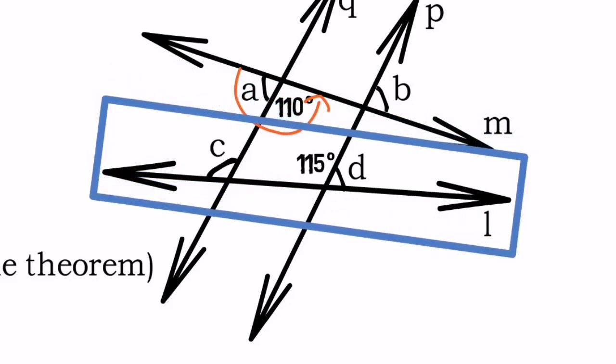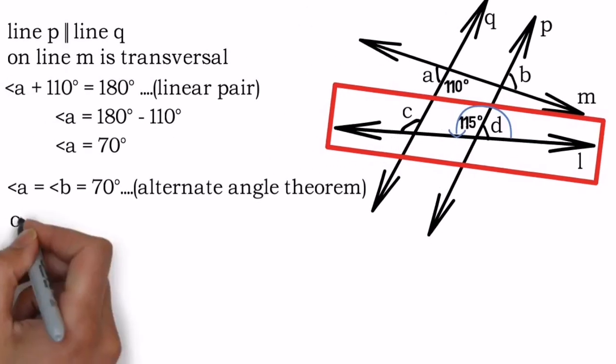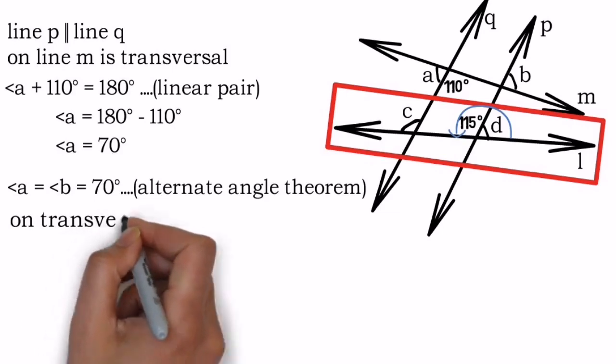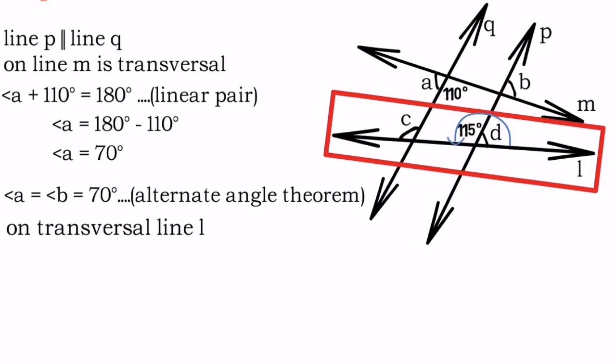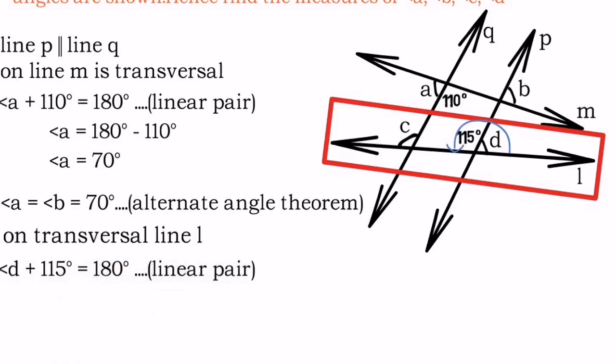Now let's shift the transversal. Let's take transversal l, and if you observe you will come to know that angle d and 115 degrees are again a linear pair. The way we found angle a, we can find angle d. On transversal l, angle d plus 115 degrees equals 180, so angle d equals 180 minus 115, which results in 65 degrees.